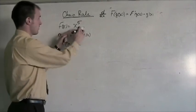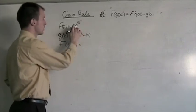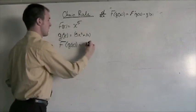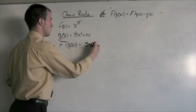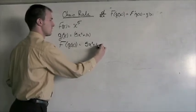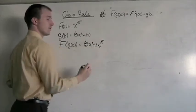So, looking at the f of x function, it's simply x to the fifth, so instead of x, we replace that with 5x squared plus 3x to the fifth power.